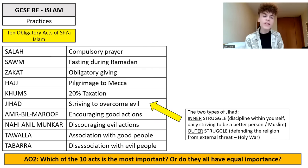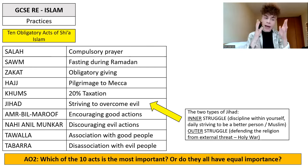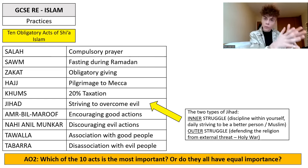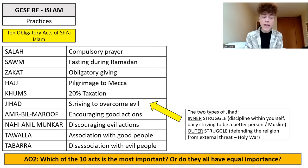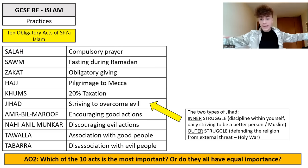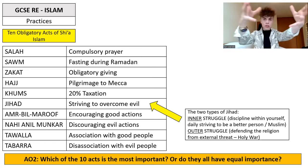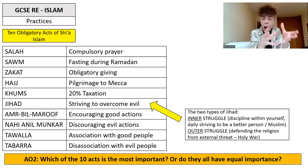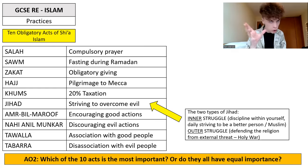Alongside the five pillars, we also need to know the ten obligatory acts of Shia Islam. There are crossovers: we have Salah — compulsory prayer, though Shia Muslims may combine the times of prayer into three. It's the same 17 rakas, just combined. We have Sawm, fasting during Ramadan; Zakat, obligatory giving; but Shia Muslims also have Qums — an extra 20% taxation, which we'll look at later. And Hajj — pilgrimage to Mecca, all about unity, the oneness of the worldwide Islamic community, with three million people coming together to worship God in the holiest place on the planet.